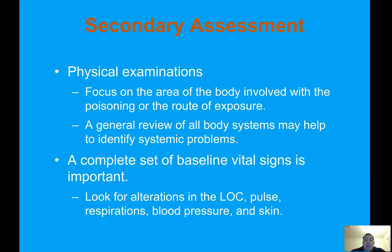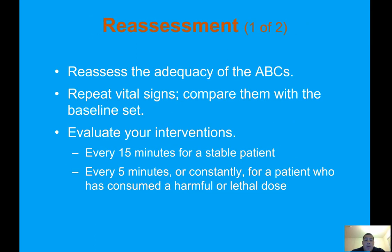Physical examination should focus on the area of the body involved with poisoning or the route of exposure. A general review of all body systems may help to identify systemic problems. A complete set of baseline vital signs is important. Look for alterations in LOC, pulse, respirations, blood pressure, and skin. Reassess the ABCs every five minutes for unstable patients and every 15 minutes for stable patients. Repeat vital signs and compare them with the baseline set to determine if the patient is improving or deteriorating.